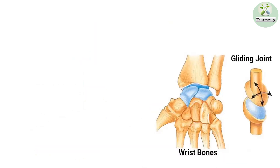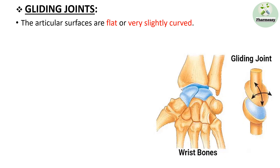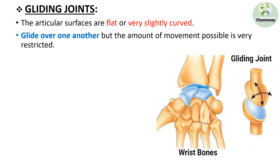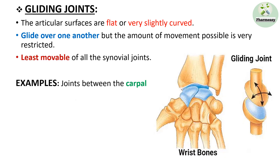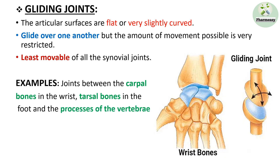Gliding joint: In this type, articular surfaces are flat or very slightly curved. They glide over one another, but the amount of movement possible is very restricted. Examples are joints between the carpal bones in the wrist, tarsal bones in the foot, and the processes of the vertebrae. The diagram shows gliding joints between the carpal bones.